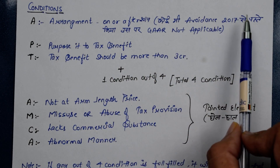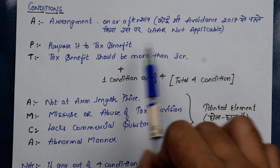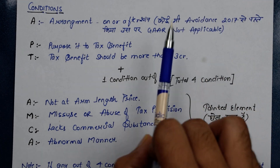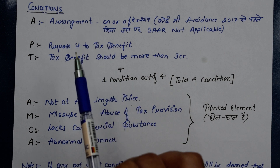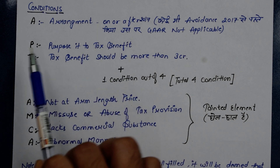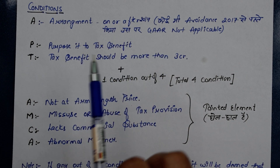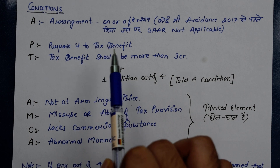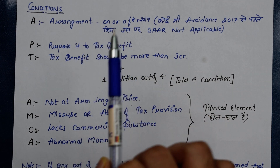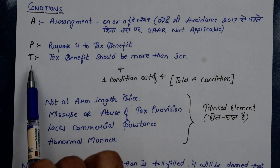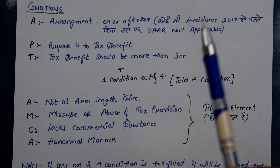GAAR is applicable from 2017 onwards. Any arrangement made in 2017 or after that will be covered under GAAR. Condition number one is that there must be an arrangement whose main purpose is to obtain a tax benefit. Condition number two is that the tax benefit must be more than 3 crore rupees. If the tax benefit from an arrangement is 3 crore or more, then it can be covered under GAAR.